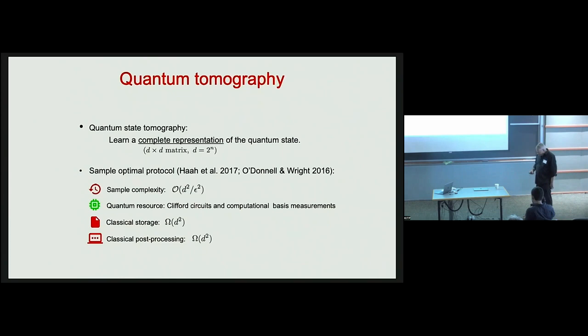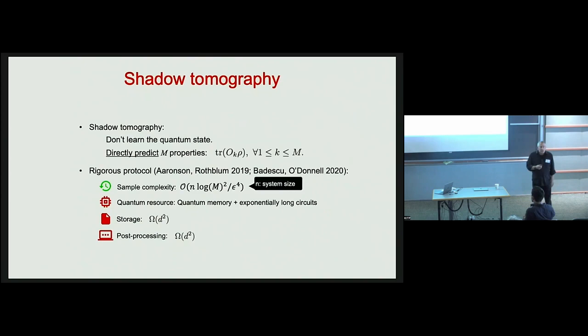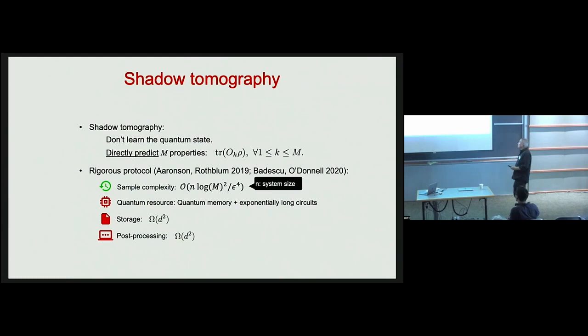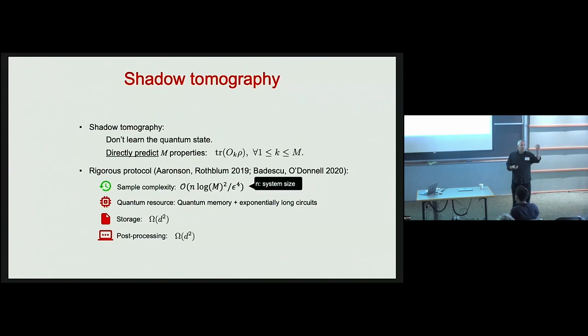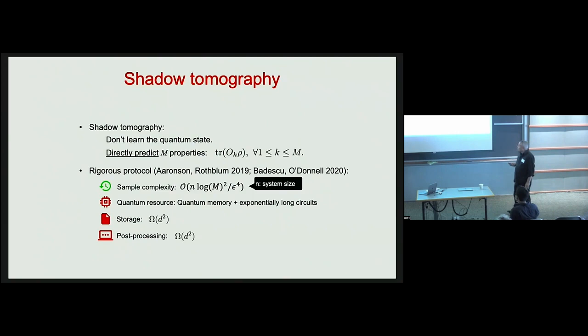There's a beautiful idea called shadow tomography which takes the point of view that we don't really need a complete description. We may be satisfied to be able to predict accurately many properties of the state, like the expectation values of many observables. Using shadow tomography we can predict the values of many observables with access to a number of copies of the state which is just linear in the system size and polylogarithmic in the number of properties we want to predict. But shadow tomography is not a practical protocol because it requires entangling measurements across multiple copies of the state, requiring quantum circuits of exponential size.